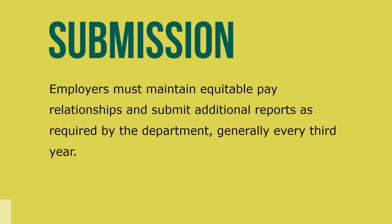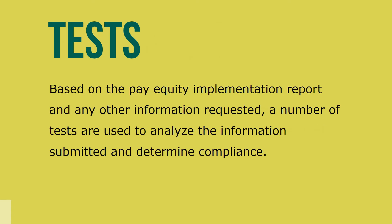Employers must maintain equitable pay relationships and submit additional reports as required by the department, generally every third year. The department monitors compliance on an ongoing basis and reports to the legislature annually. The procedures for imposing or appealing penalties still apply to those agencies found in compliance at one time but found not in compliance at a future date. Based on the Pay Equity Implementation Report and any other information requested by the department, a number of tests are used to analyze the information submitted and determine compliance or non-compliance.